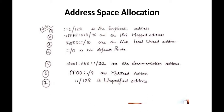In IPv6, the loopback address is seven zero sections followed by 0001, written as ::1/128. It is reserved for the loopback address and for networking.